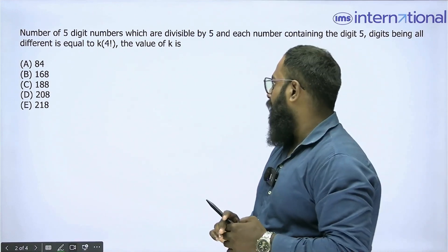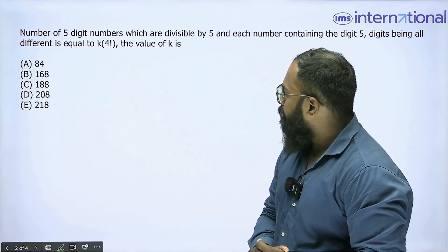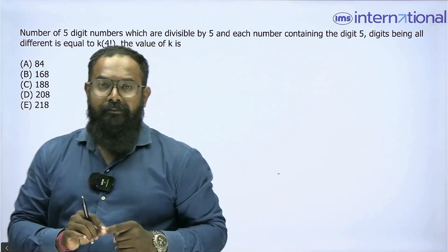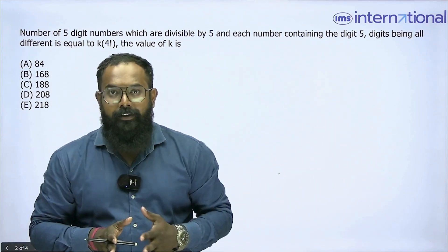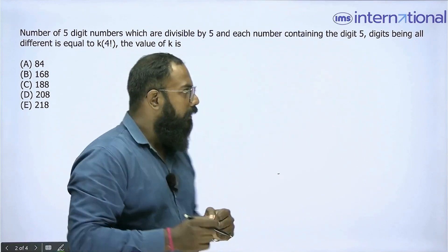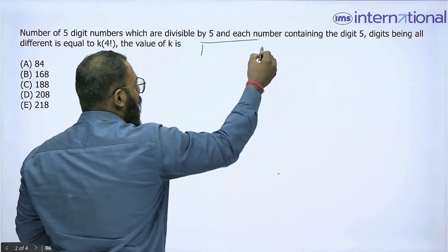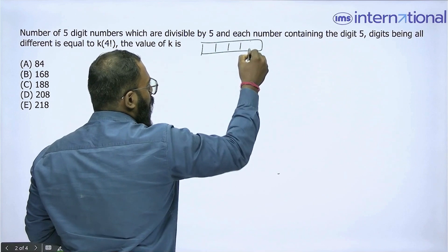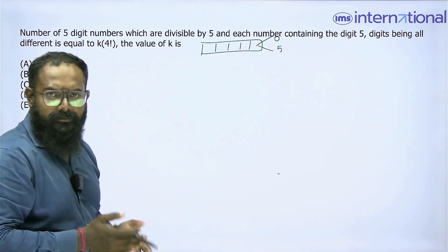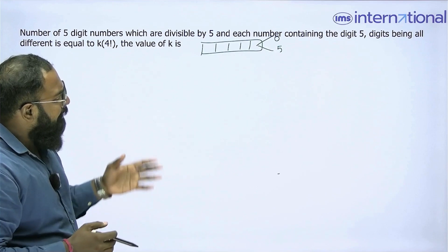What is the value of k? We need to find 5-digit numbers that are divisible by 5 and should contain 5. Now a 5-digit number which is divisible by 5 will either have a 0 or a 5 at its unit place, so we have some cases.